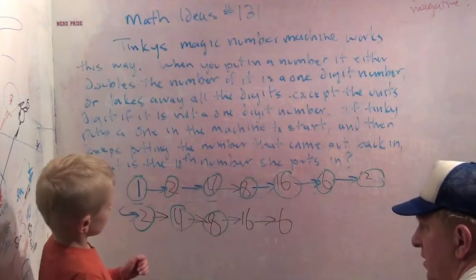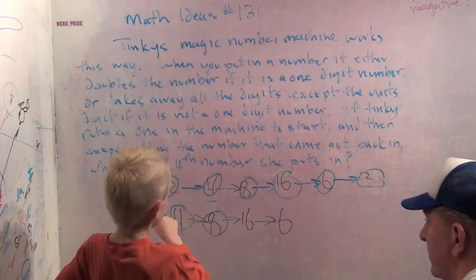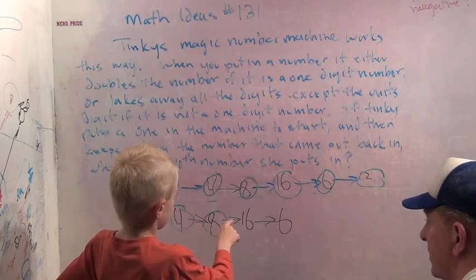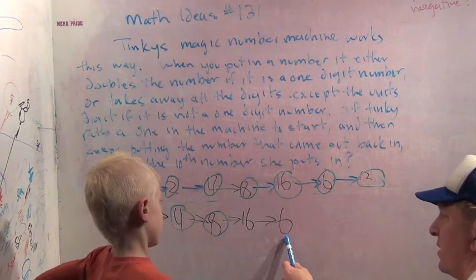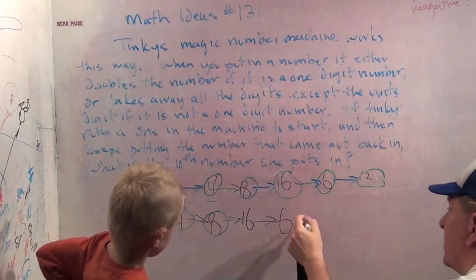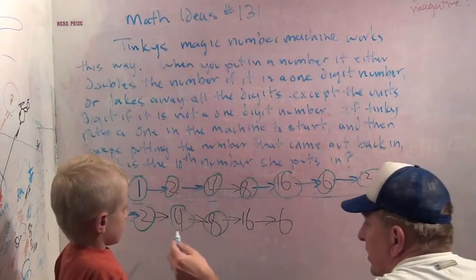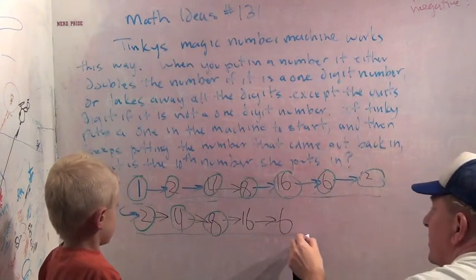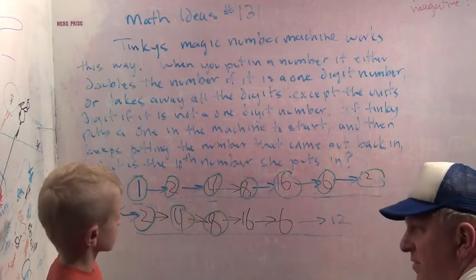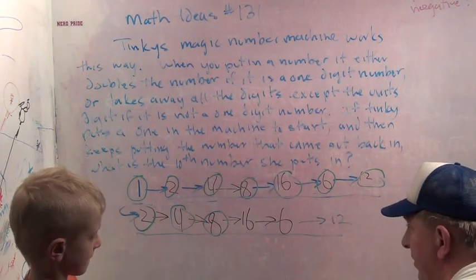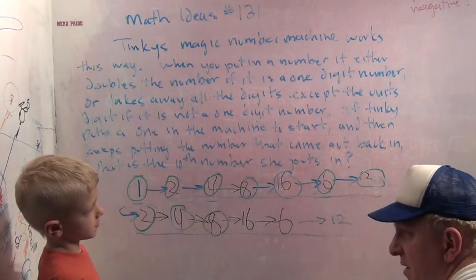I noticed a pattern. It goes one, two, four, eight, sixteen, six, twelve. Two, four, eight, sixteen, six. What's going to be the next one? It's going to be twelve. Then it's going to be two. So this two, four, eight, sixteen, six, twelve keeps repeating. Then it's going to go two, four, eight, sixteen, six, twelve. So we could actually figure out a lot. If someone asks us what's the one hundredth number, we could actually figure it out because it keeps repeating. That's pretty neat, isn't it?